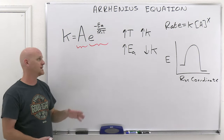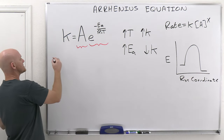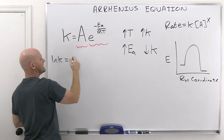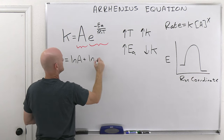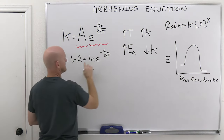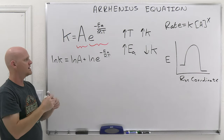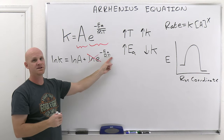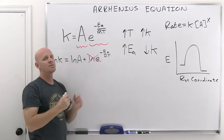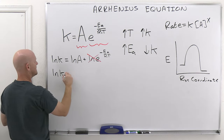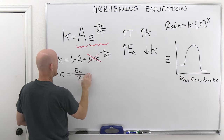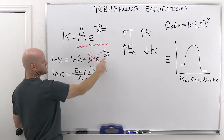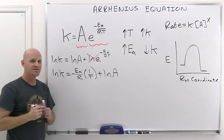You might see the Arrhenius equation written in a couple of different ways. Taking the natural log of both sides gives: ln(k) equals negative Ea over R times (1/T) plus ln(A). The natural log and exponential are inverse functions, so they cancel, leaving just the negative Ea/RT term and ln(A). This is rearranged so that Ea/R is multiplied by (1/T) separately — this form is commonly provided to students and is how it's typically presented.